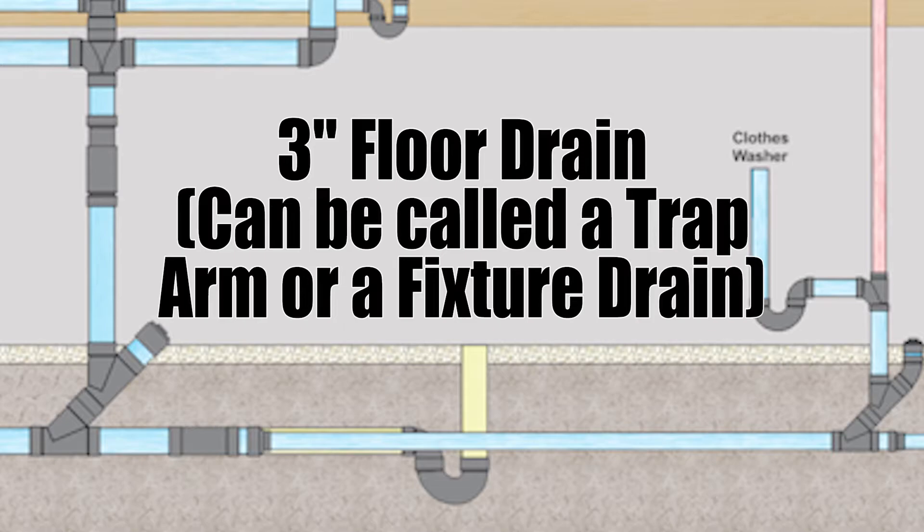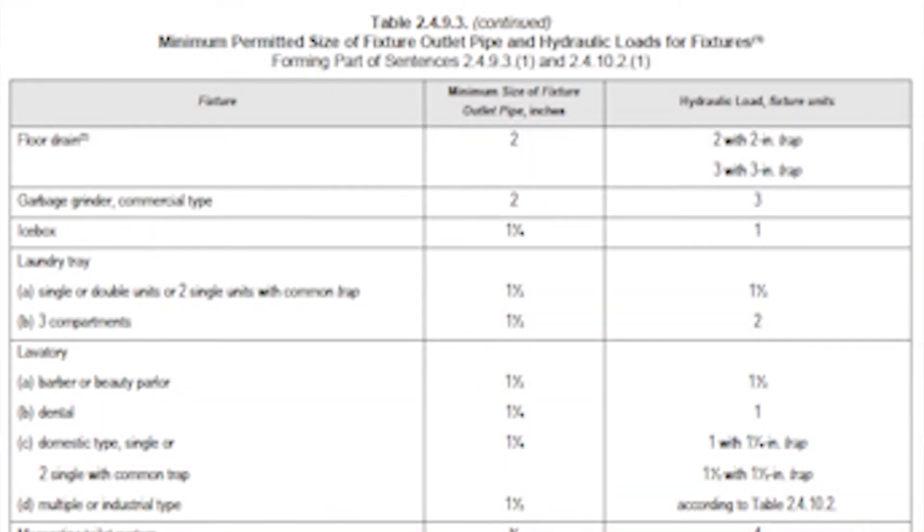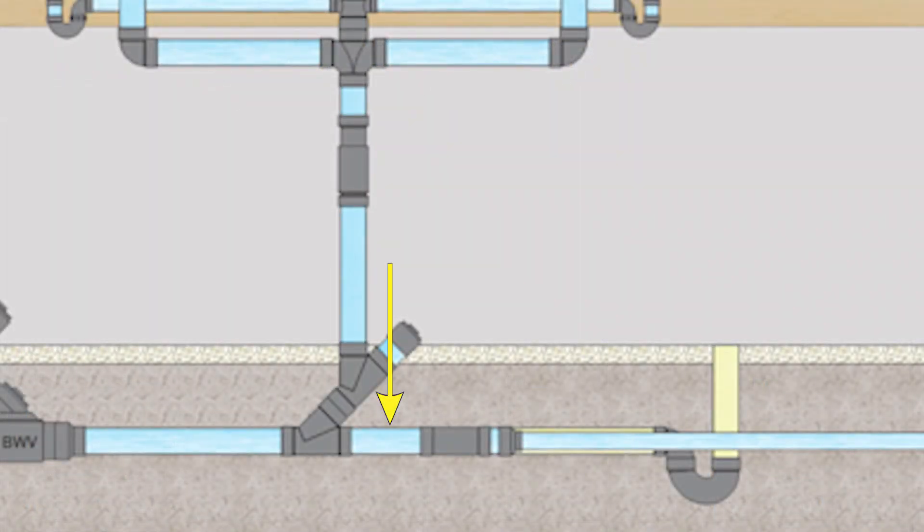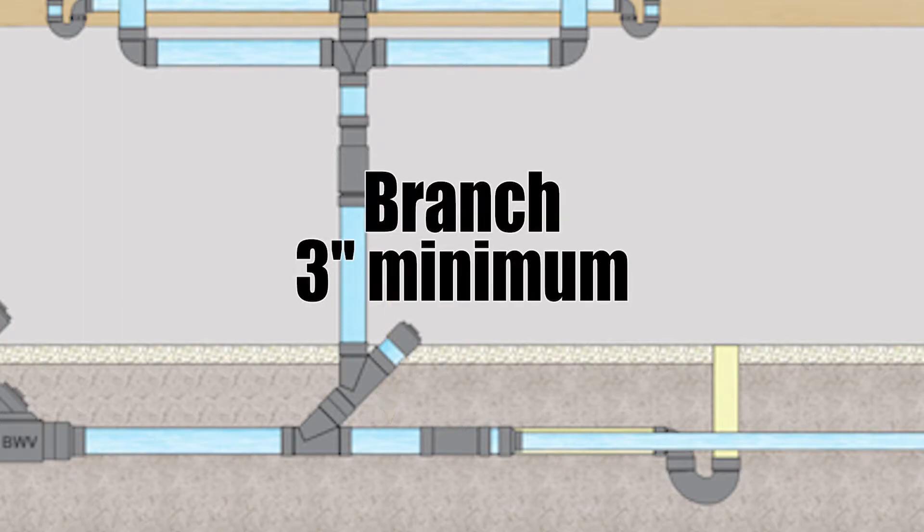That will be discussed in a future video but just so we know table 2.4.9.3 says that a floor drain can actually be two inches in size. So it would be two fixture units with a two inch trap or three fixture units with a three inch trap. And now we've got another small length of horizontal pipe that is the junction of two or more soil waste pipes therefore that is a branch as well. Now we're serving a three inch floor drain therefore that branch will need to be three inches.